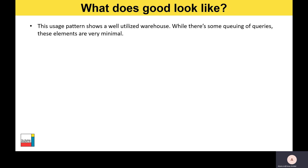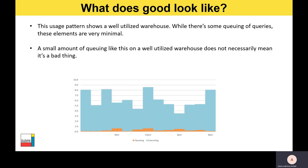Let's have a look at some different profiles of warehouse issues over time so we can understand what good and bad looks like. Starting with the good: the usage pattern below shows a well-utilized warehouse. While you can see some queuing of queries shown in orange on the graph, it's quite minimal in comparison to the executing queries. A small amount of queuing on a well-utilized warehouse doesn't necessarily mean a bad thing — you can't always avoid queuing, and sometimes you may get an influx of queries you just can't account for. This is what a good profile looks like, typical of data consumers running dashboard queries or analytical processes throughout the day.